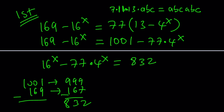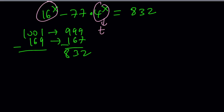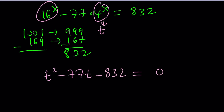That gives you a quadratic equation. We're going to use substitution — let's call 4 to the power x something. How about t? This gives us t squared minus 77t equals 832. I'm going to bring the 832 over because I'm going to try to factor this. So here's our goal: we are trying to find two numbers whose product is negative 832, and those numbers have to add up to negative 77.